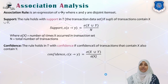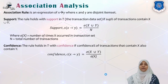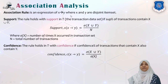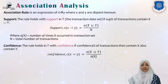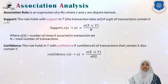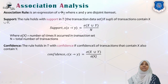We have something called an association rule, and that rule takes the form of X given Y, where X and Y are two disjoint item sets. This rule determines that if item set X is purchased, then there is a probability that item set Y would also be purchased by a customer.